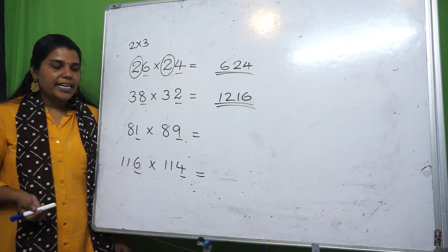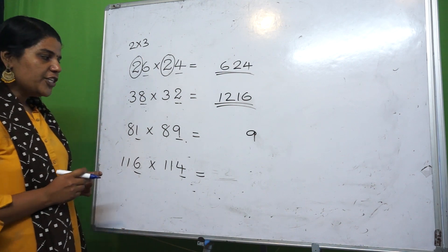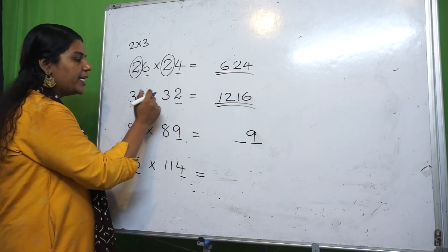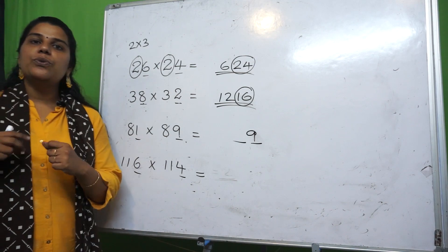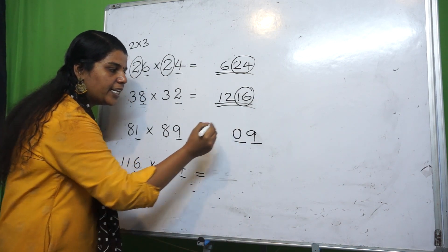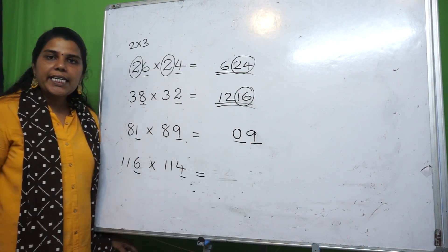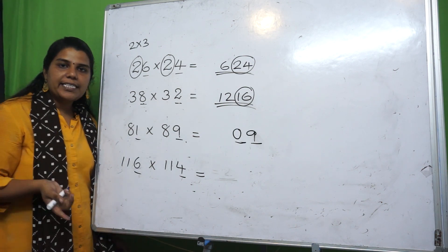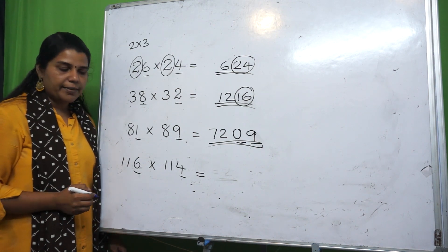Third question: 81 and 89. The ones digits are 1 and 9, which add up to 10. We multiply the ones digits: 1 times 9 is 09 — that gives us two digits: 0 and 9. The tens digit common number is 8; the next number after 8 is 9, so 8 times 9 is 72. The final answer is 7209.